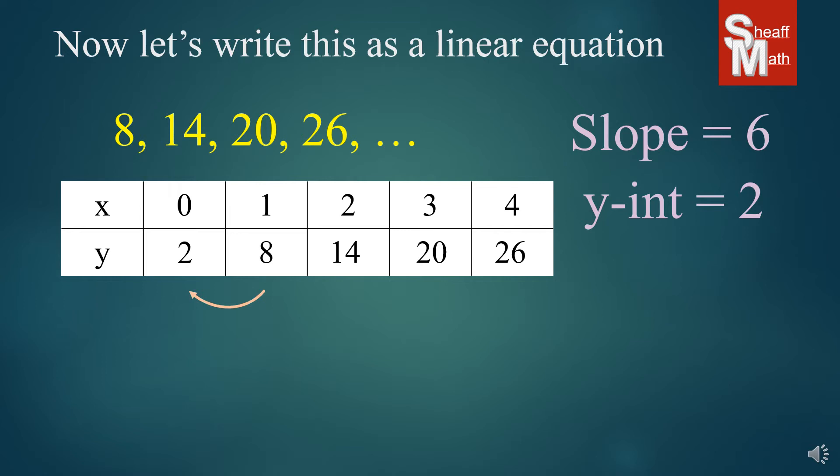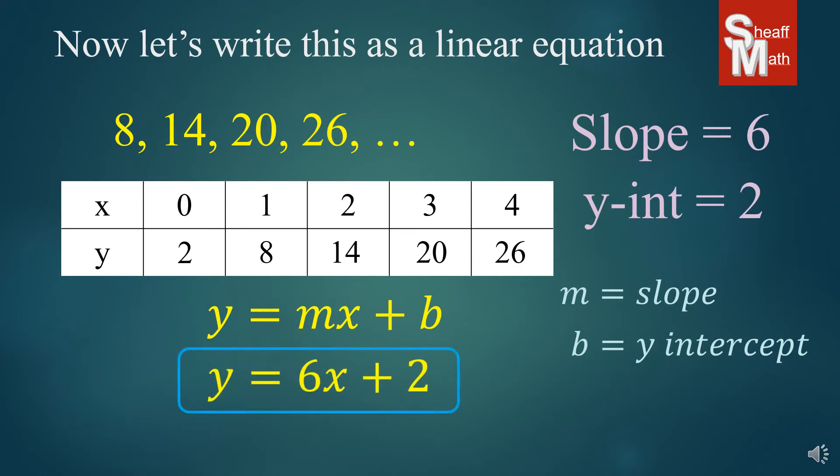Now, we have the slope and the Y-intercept. And if you have those two pieces of information, then you can use the slope-intercept form of the linear equation, Y equals MX plus B. And just as a reminder, M equals the slope and B equals the Y-intercept. And so, all you have to do is put in 6 for the M and 2 for the B, and you have your equation. And so, going back to that 200th term, if I asked you what the 200th term of this sequence is, all you would have to do is put in 200 into the X, calculate it out, and you would find out what number that would be.